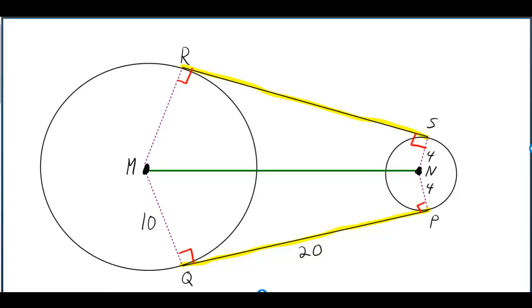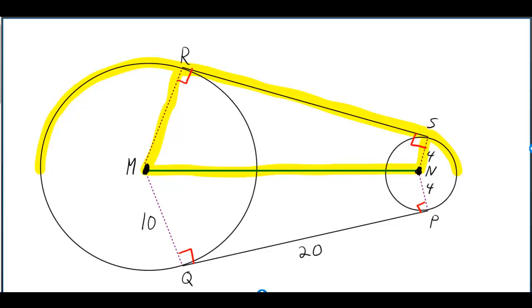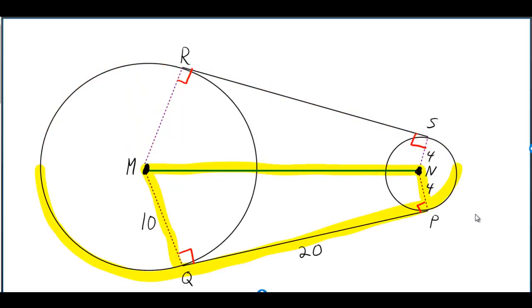A convincing argument why RS is equal to QP is just symmetry. The line running down the middle connecting the centers cuts the figure into two equal halves — the top half and the bottom half. Therefore, if we have 20 for QP, we have 20 for RS.